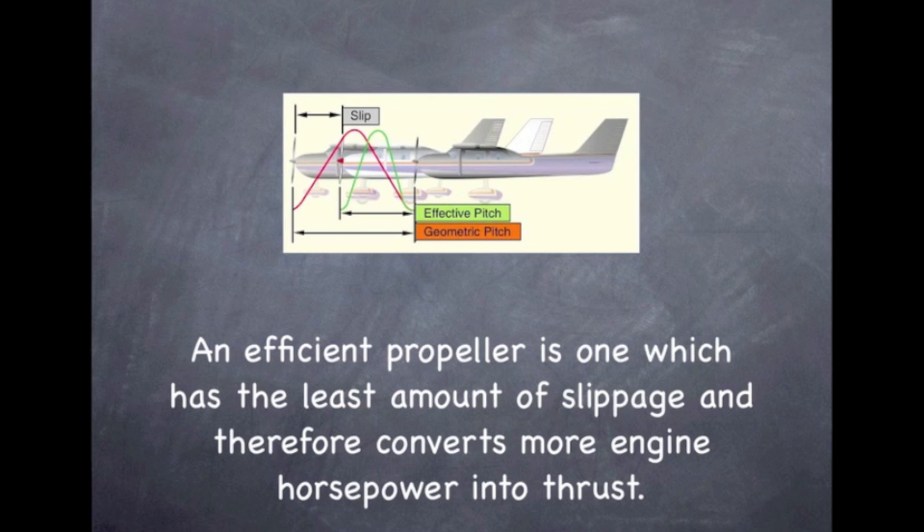When changing the blade angle, we change the pitch of the propeller and use the term controllable pitch propeller. Therefore, when we change the blade angle, we are changing the distance the propeller would screw through the air, or are controlling the pitch of the propeller. That's why we call it a controllable pitch propeller.